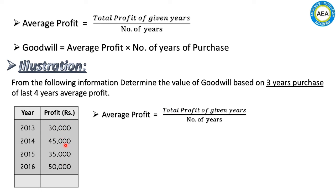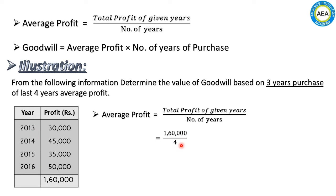First we find the total profit of the given years. The total profit comes to ₹1,60,000. Then we apply the formula: Average Profit = ₹1,60,000 ÷ 4 (number of years). So the average profit is ₹40,000.